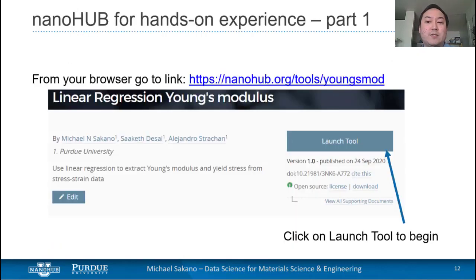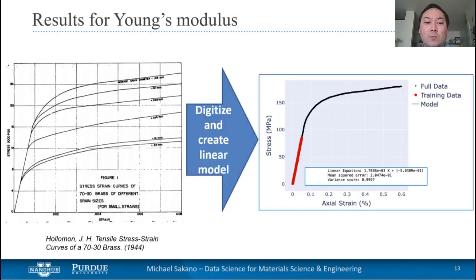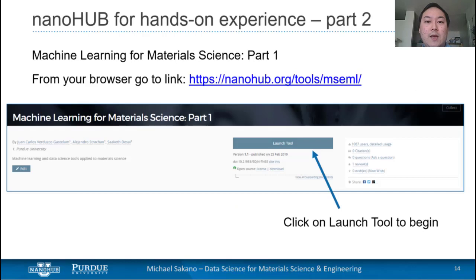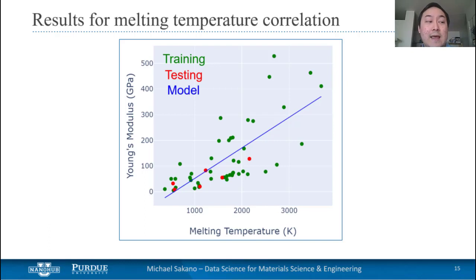Both of these previously mentioned examples will be followed via a hands-on tutorial that you will be able to do personally with the provided data. Shown on the left is an image of a stress-strain profile taken from a paper, which will be preloaded into the first part for linear regression, and you'll be able to use that data to create your own linear model and make predictions on the Young's modulus. In the second part, we'll be exploring correlations between Young's modulus and melting temperature, and again you'll be able to read in the data and create your own model.